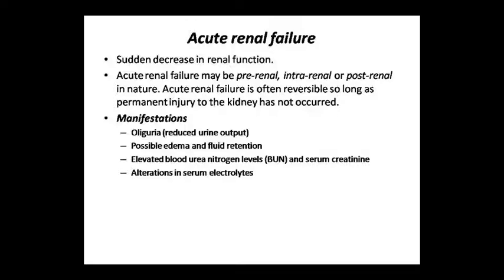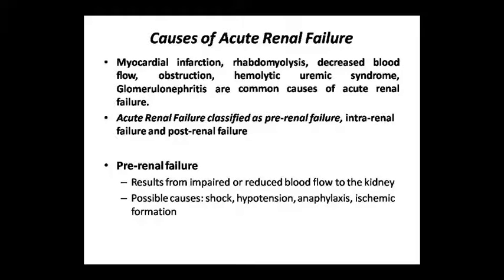Pre-renal causes involve diminished blood flow to nephrons and hypoperfusion due to hypovolemia, hypotension, and decreased cardiac output. Intra-renal causes involve disease of renal tissue due to nephrotoxins or ischemia. Post-renal causes involve obstruction to the flow of urine due to anti-cholinergic drugs, infection, tumors, blood clots, and calculi.